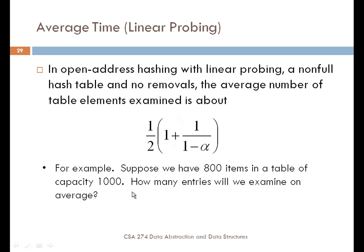As my table gets to about 80% load factor with 800 items in a 1,000-element table, the number of times I need to access different array elements to actually find something is about three. Ideally, we want to be down closer to one. So what you would want to do is have a table that is much larger than the number of items you're going to store. The tradeoff, of course, is space — how large do you actually want the array to be?